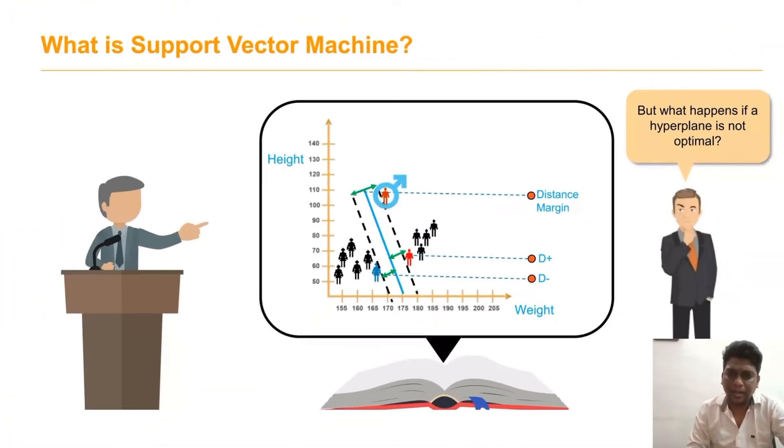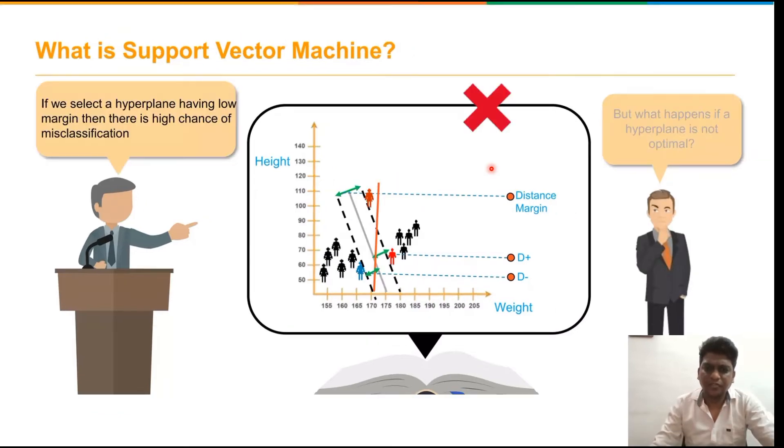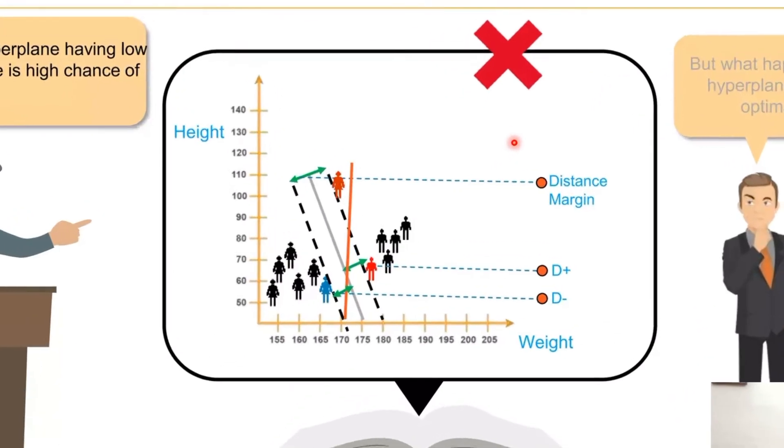If the selected hyperplane is not optimal, there is a high chance of misclassification.